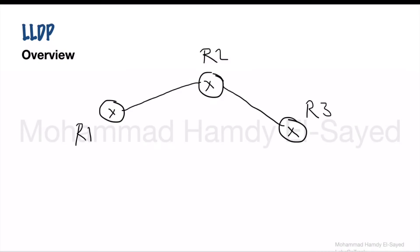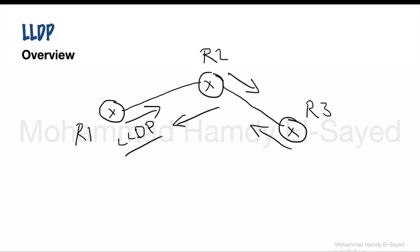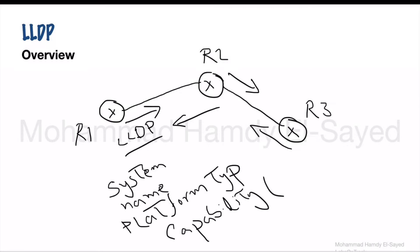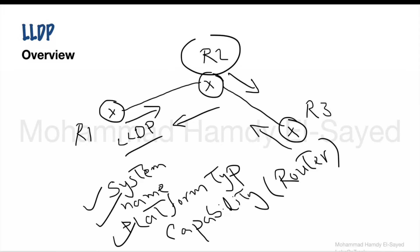In this example, LLDP works between neighboring network devices. Neighboring router R1 sends an LLDP message to R2, R2 does the same, and also on the link between R2 and R3 they start to discover each other using LLDP protocol. Each router starts to send information about its identity, its capability, like system name and platform type. Capability states that it's a router and many other information, so R2 can collect all this information about its neighboring router.